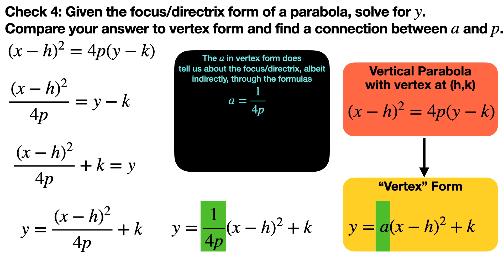The a in vertex form actually does implicitly tell us about the focus and directrix, through the formula a equals 1 over 4p. Other useful rearrangements are: p equals 1 over 4a, and 4p equals 1 over a. So if someone gives you a parabola in vertex form, you can find the focal distance and determine where the focus and directrix are using these conversion formulas.